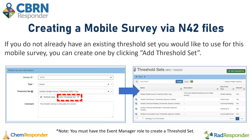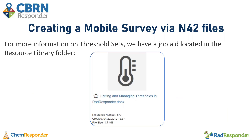If you do not already have an existing threshold set you would like to use for the mobile survey data type, you may create one by clicking the add threshold set button, which will take you to the threshold set page. You can have multiple threshold sets for the mobile survey data type because equipment may be calibrated differently — the threshold set for one drone may be different than another. You must have the event manager role to create a threshold set. If you would like more information on threshold sets, there is a job aid located in the resource library with details on how to create, edit, or manage them.